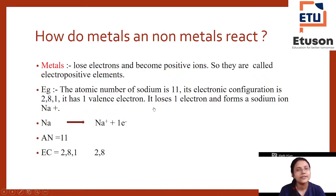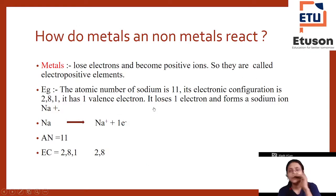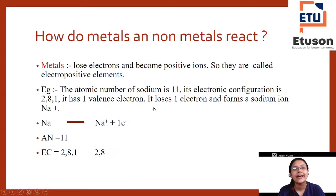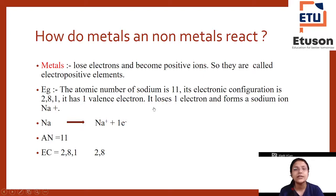Now, how do metals and non-metals react? Metals lose electrons to become positive ions — so if one electron is lost, it creates a positive charge. Therefore metals are called electropositive elements, because they lose electrons and become positive ions, forming cations.